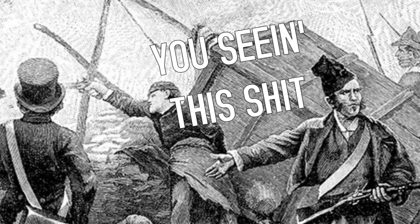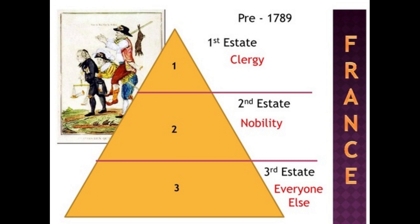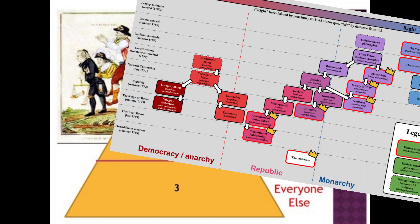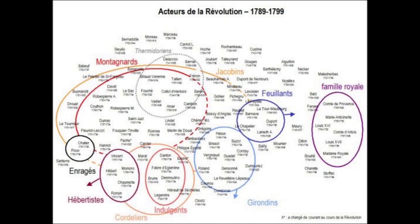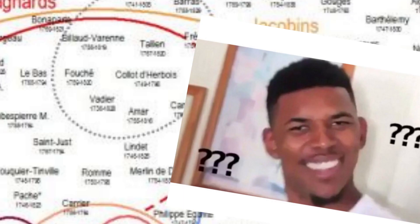The French Revolution heard you liked political divisions, so it put some divisions on its divisions. From fall 1789 to spring 1791, a complicated divided mess had sprouted from the revolution, as certain political groups opposed or supported the revolution — with fractures within those groups over whether the revolution had gone too extreme or not extreme enough.